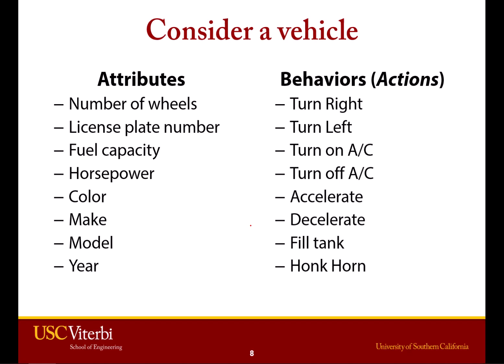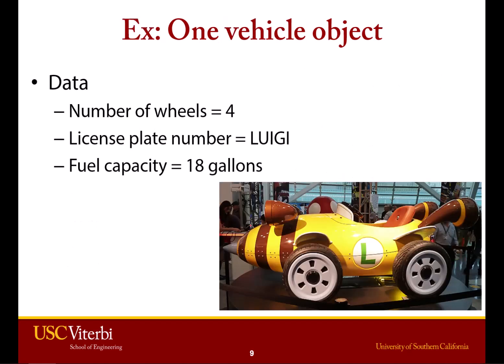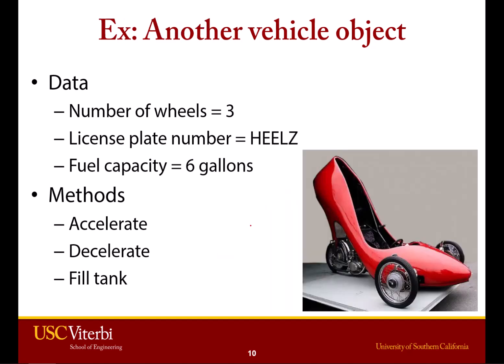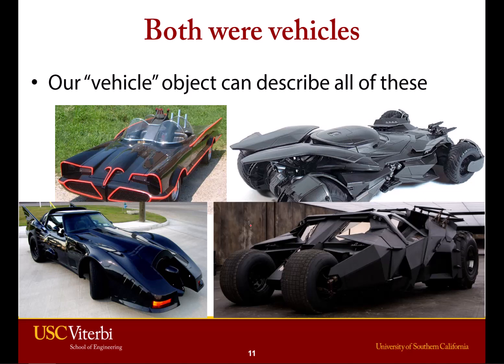If we define a vehicle in this way, this is just the template. We can then go on to create multiple vehicles that fill these attributes. One vehicle object — like the Luigi car — could have four wheels, a license plate, and 18 gallons of fuel, and actions like accelerate, decelerate, and get more gas. Another vehicle has the same attributes — a certain number of wheels, a license plate — but with different values. All these different Batmobiles, for example, could be represented by our vehicle class, even though they are different.